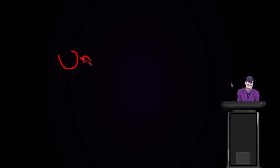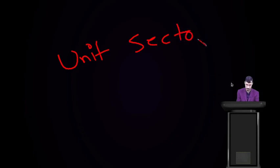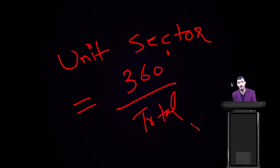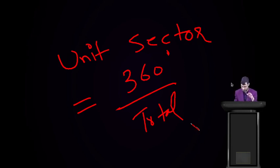Can you tell me how can we find the unit sector for a pie chart? Yes, the formula of unit sector — 360 degrees divided by total value — that is the formula. Now let us start today's class and learn something new.